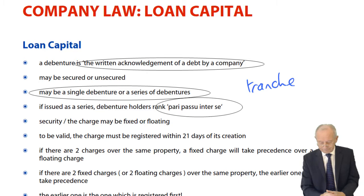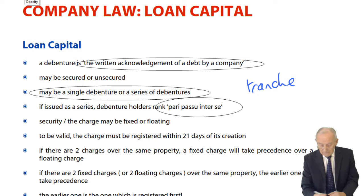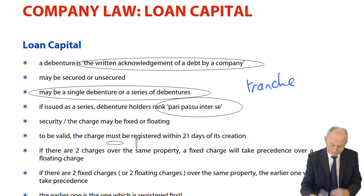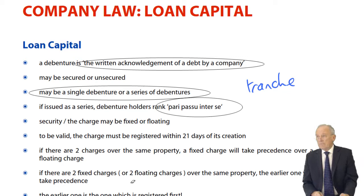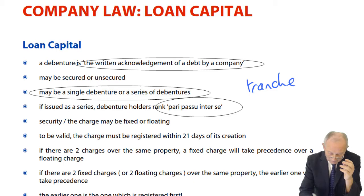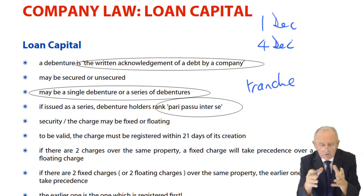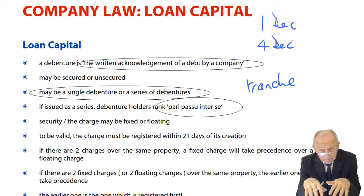The security may be a fixed or floating charge. To be valid, the charge must be registered within 21 days of its creation. But a problem arises if there are two similar charges — say one created on 1st December and another created on 4th December, both fixed or both floating charges on the same property. One is registered on the 7th and the other on the 8th.